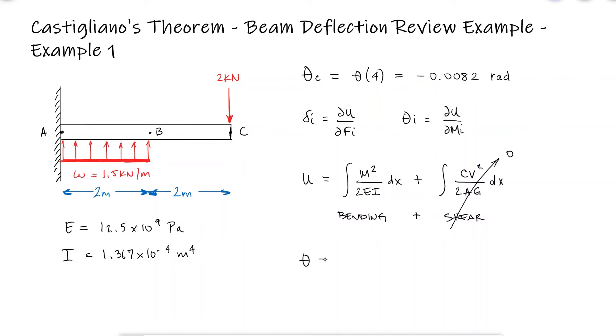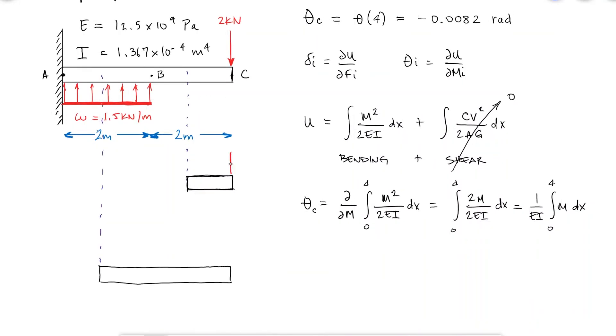The angle at C will therefore be the partial derivative of the integral, which in this case is the same as the integral of the partial derivative. Since the function for M is different from C to B than from B to A, the integral will be split into two.